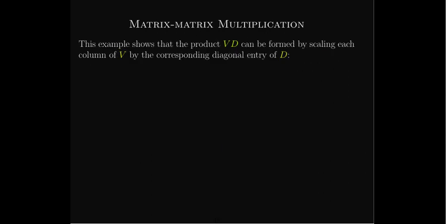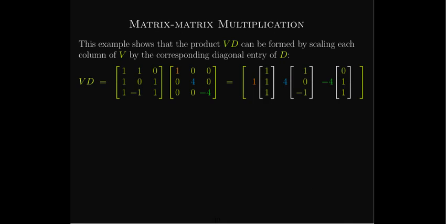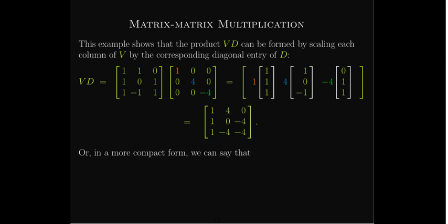So what have we done? In order to find the columns of the product, we just multiplied each column of V by its corresponding diagonal entry of D. So multiplying V times D: 1 times the first column, 4 times the second column, negative 4 times the third column — those form the columns of the product matrix. In other words, multiplying V times D gives us λ₁V₁ in the first column, λ₂V₂ in the second column, and λ₃V₃ in the third column.